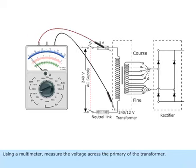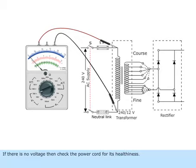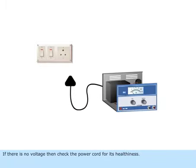Using a multimeter, measure the voltage across the primary of the transformer. If there is no voltage, then check the power card for its healthiness.